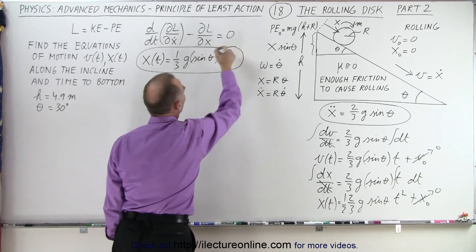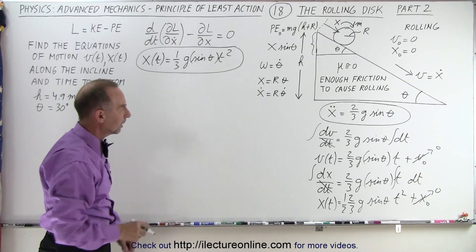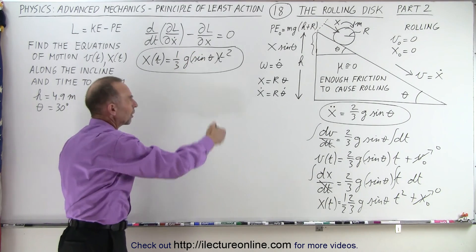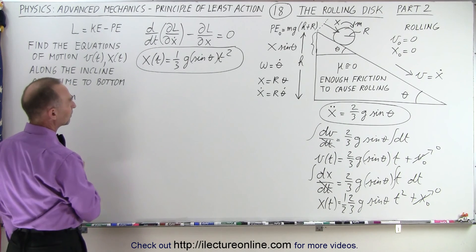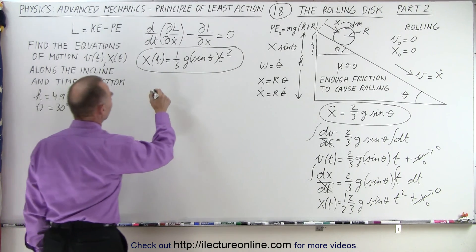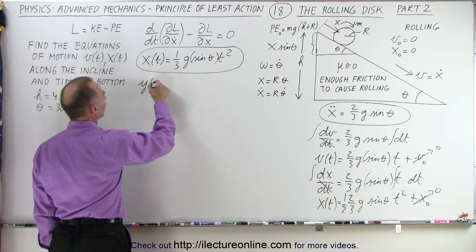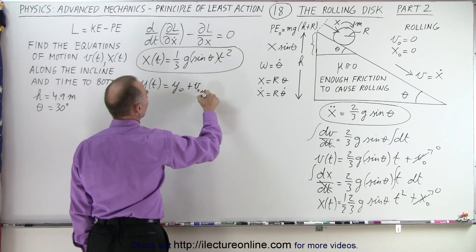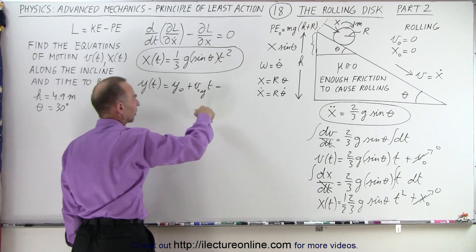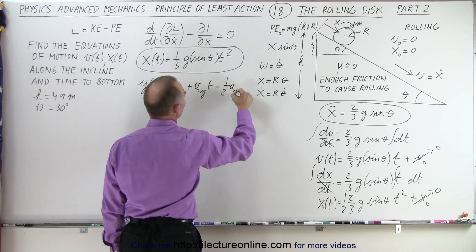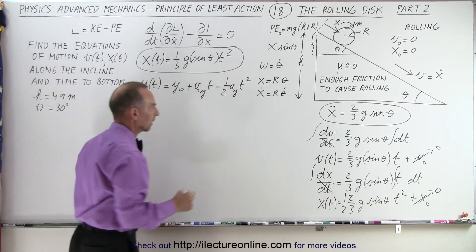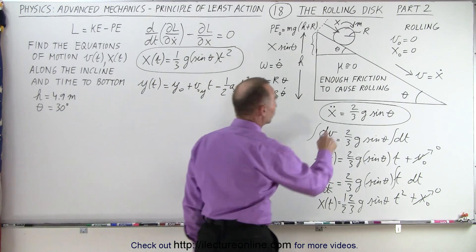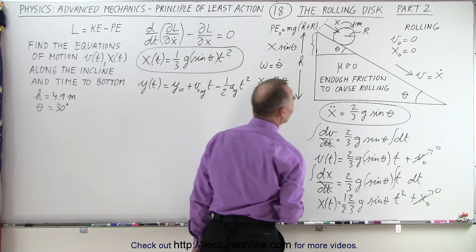This describes position as a function of time along the incline. To describe position as a function of time in the vertical direction, we use the equation: y as a function of time equals y-initial plus v-initial in the y direction times time, minus 1/2 times acceleration in the y direction times t squared. The acceleration in the y direction is the acceleration along the incline times the sine of theta.